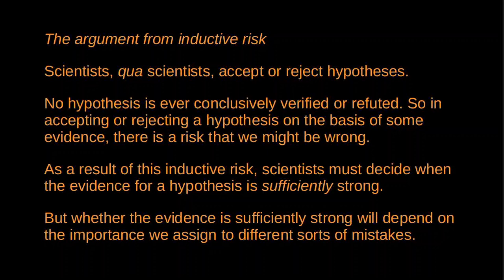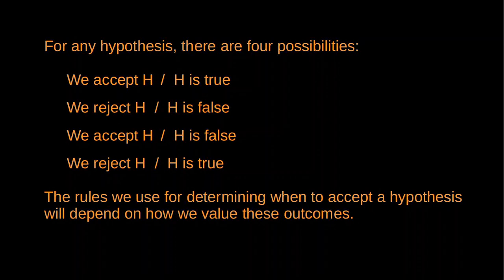With respect to any hypothesis, there are four possible outcomes: we might accept the hypothesis when it is true; we might reject it when it is false; we might accept it when it is false — a false positive; or we might reject it when it is true — a false negative. There are two types of error: accepting a false hypothesis and rejecting a true hypothesis. What rules do we use for determining whether to accept a hypothesis? That depends on how we value these various possible outcomes. As Rudner says, how sure we need to be before accepting a hypothesis will depend on how serious a mistake will be.